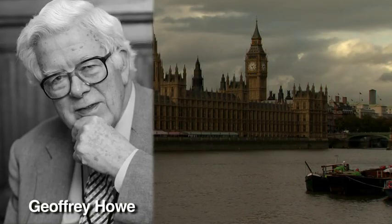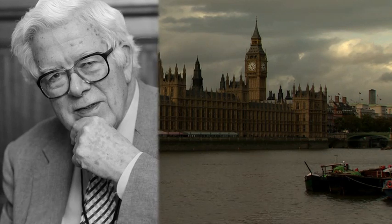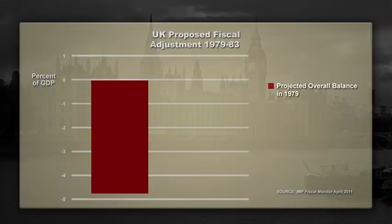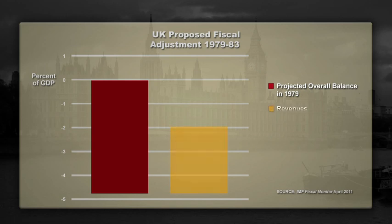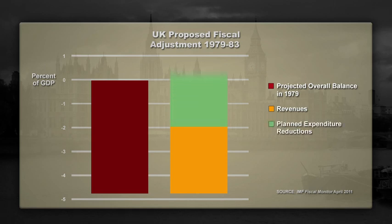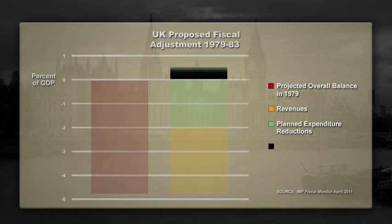In 1980, Geoffrey Howe introduced his medium term financial strategy. The red bar in this chart illustrates the UK fiscal deficit in percent of GDP in 1979. Geoffrey Howe proposed a mixture of tax revenue increases, here represented by the yellow bar, and expenditure reductions, the green bar, which would generate a small fiscal surplus in 1983, represented by the black bar.